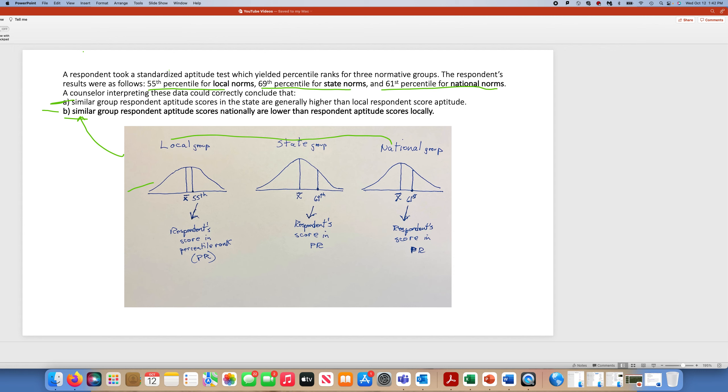The student's results were as follows: 55th percentile for local norms, meaning 45 percent scored higher. This may be, if it was an end-of-grade test, like if this was an end-of-grade aptitude test. I don't think they have that, but they do have it for reading and math and so forth.